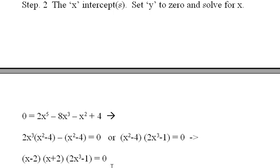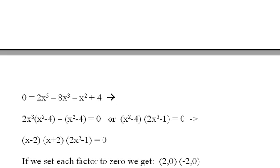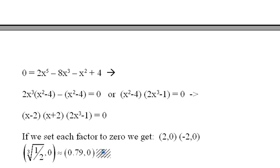That allows us to find the x intercepts pretty easily. If I set each one of these factors to 0 I'll get these answers. In other words we'll get these x intercepts: 2, negative 2, and the cube root of 1 half which is about 0.79.